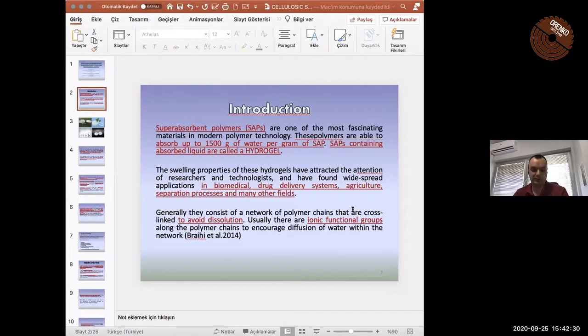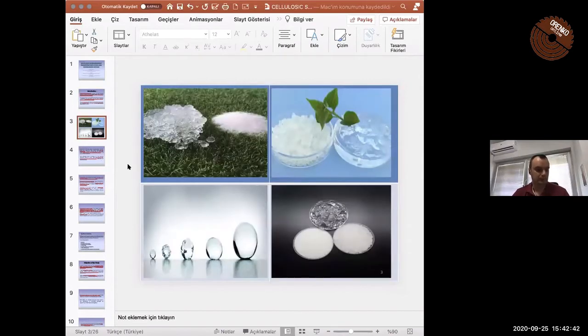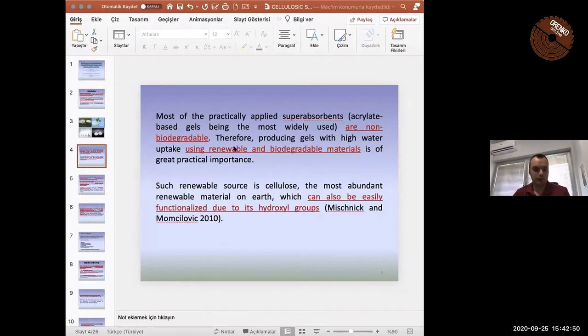To protect their structure in production of hydrogels, cross-linking agents are used, usually ionic agents. You can see from the screen some types of hydrogels. Next one.